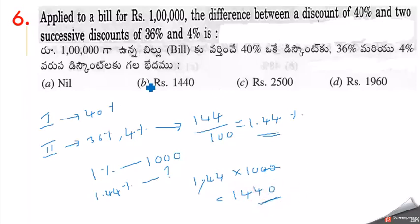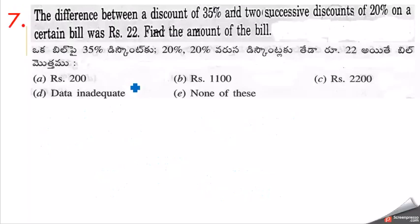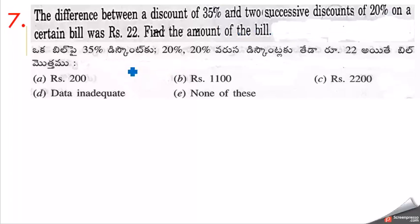Next, seventh question. The difference between a discount of 35% and two successive discounts of 20% on a certain bill was 22 rupees. Find the amount of the bill.